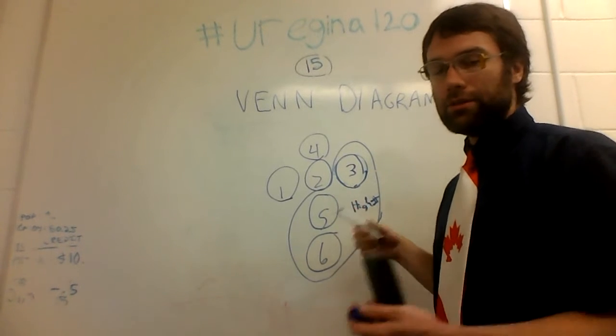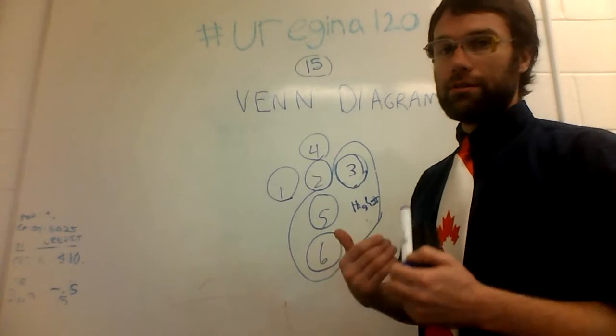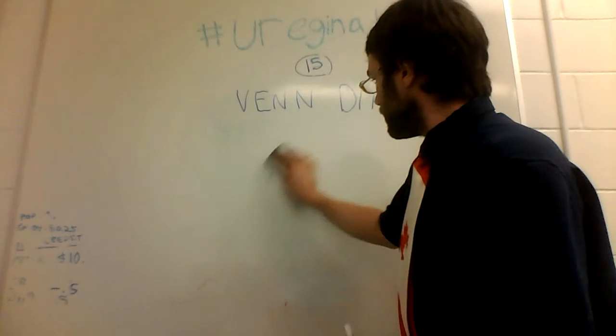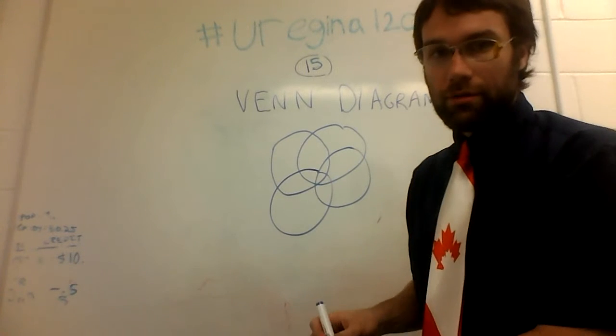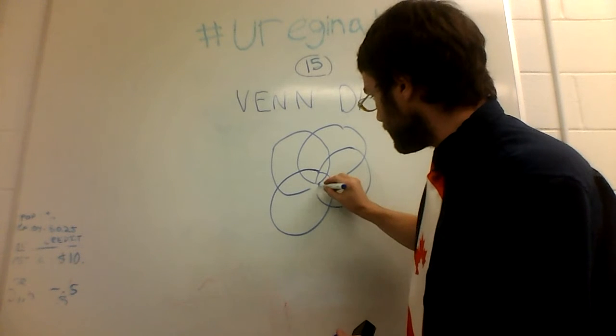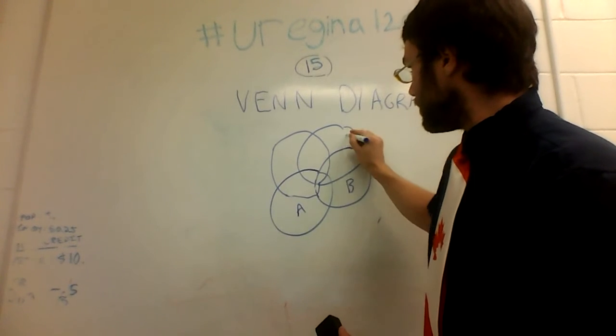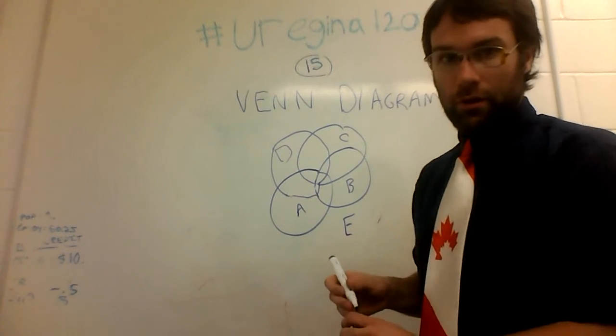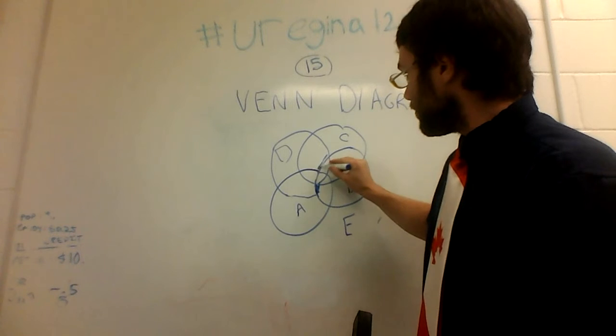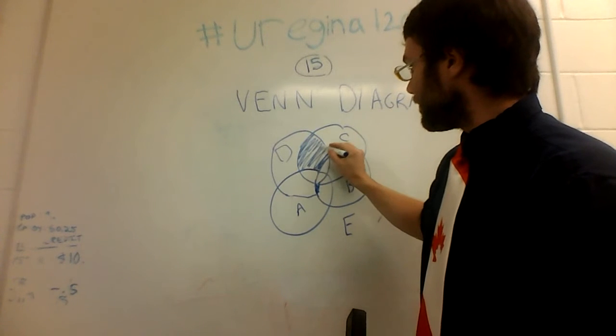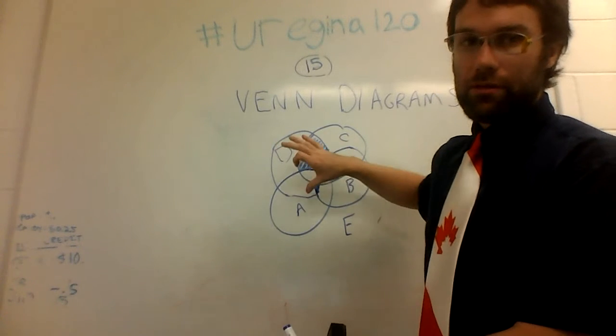But these diagrams really only start coming into usefulness when you start being able to look at the way that things intersect, where they intersect, where multiple things intersect in many different ways. You get something like this, where you have four or five different properties, or things that are happening. And you can start shading them.